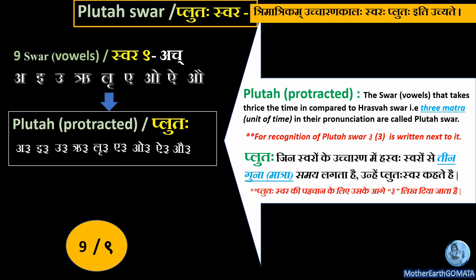Let us see some examples of Pluta Swara. The first is 'Om' — you will see this in many Vedic scriptures written with a 3 next to it, so O is a Pluta Swar because 3 is written next to it. Next is a Bhagavad Gita shloka from Karma Yoga — here O is a protracted or Pluta Swar because 3 is written next to it. Pluta Swara are only used in Vedic Sanskrit.